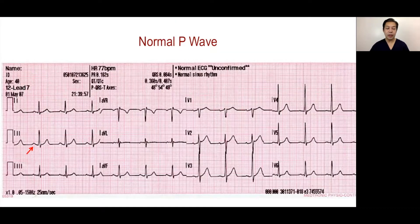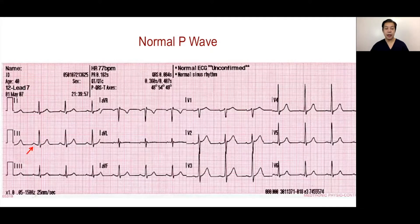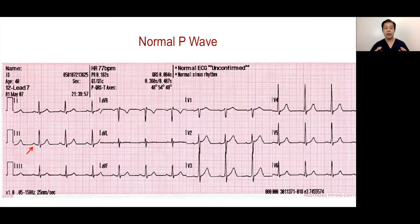When we say P-wave and the normal P-wave, we actually refer to the P-waves or atrial activation coming from the sinus node impulse formation. When we talk about atrial rhythm and we say it's sinus, you need to look at the P-wave morphology and nothing else. Sometimes when I ask fellows to define what a sinus rhythm is, they say it's a normal-looking P-wave followed by a normal-looking QRS with a normal PR interval. That is normal sinus rhythm, but when we just talk about sinus rhythm, we limit ourselves to the morphology of the P-wave and the origin of the atrial rhythm.